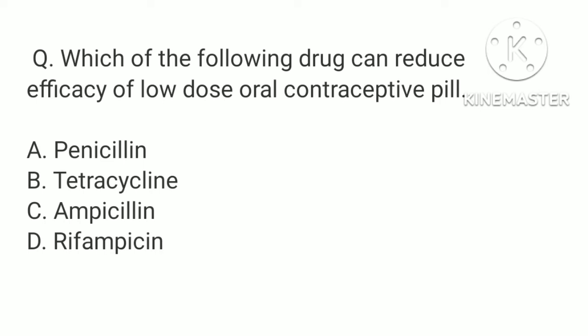Which of the following drugs can reduce efficacy of low-dose oral contraceptive pill? a. Pericinil, b. Tetracycline, c. Ampicillin, d. Rifampicin. The correct answer is d. Rifampicin.